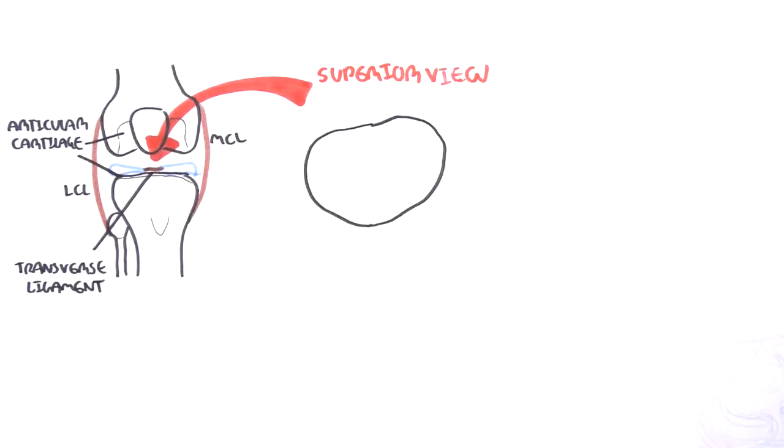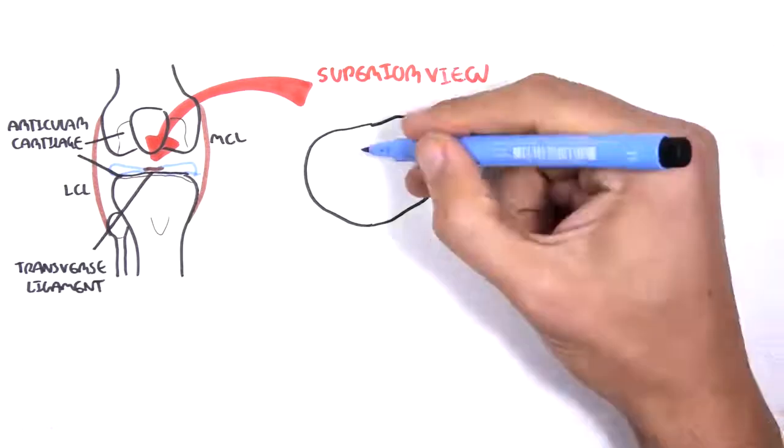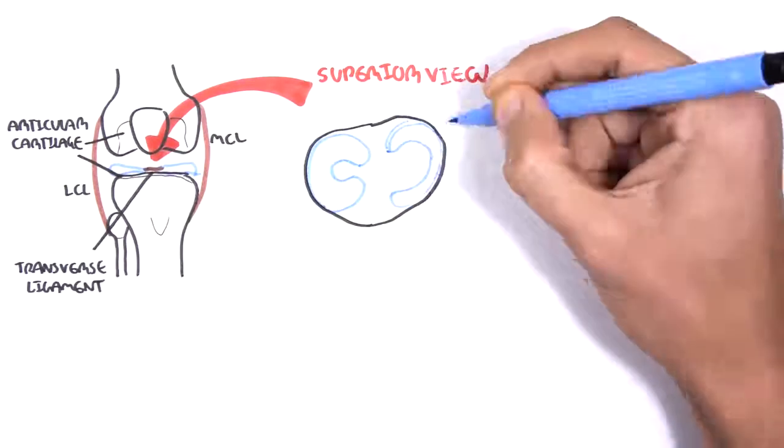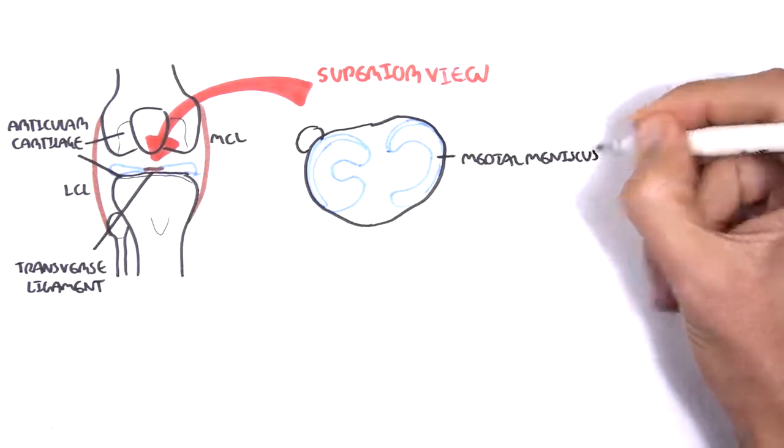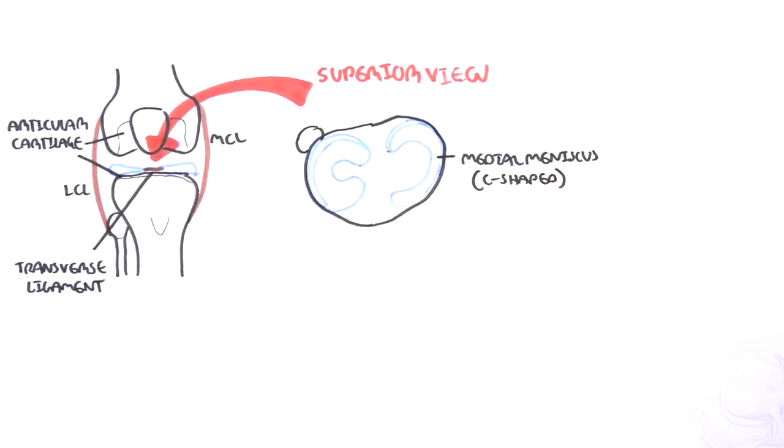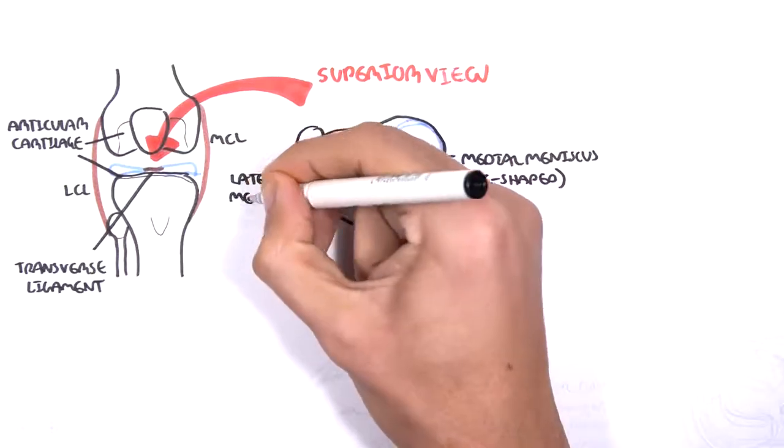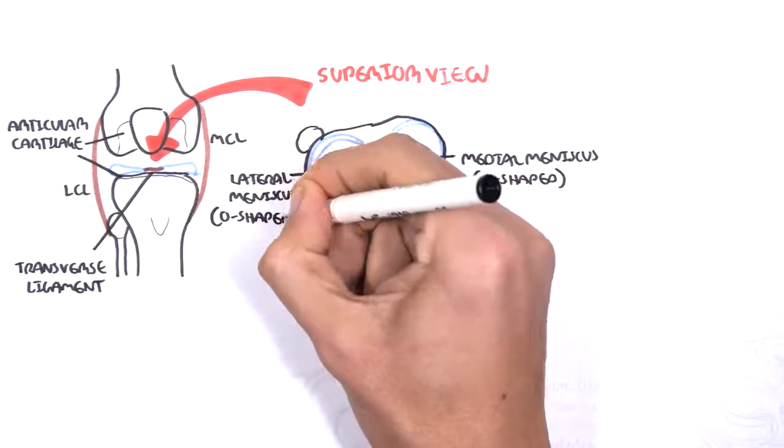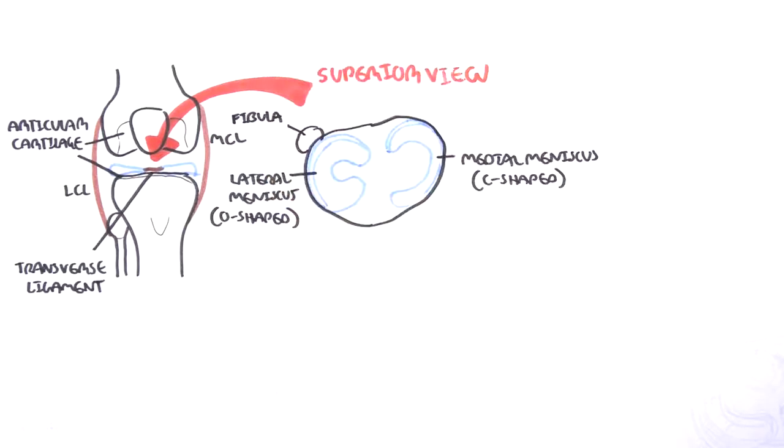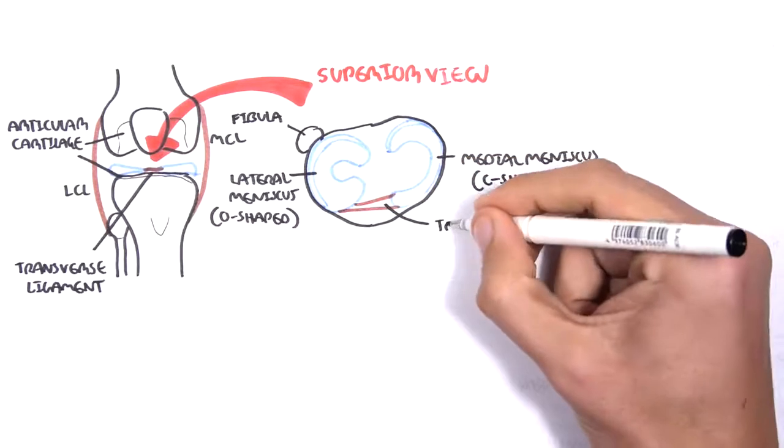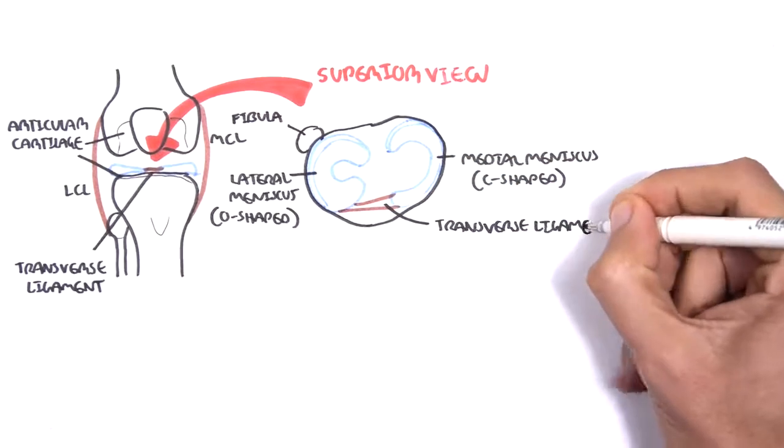Remember that the meniscus sits on the tibial bone. To orientate ourselves here, here is the medial meniscus. It is C shaped. Lateral meniscus is more of an O shaped. Here is the fibula bone at the posterior lateral part of the tibia. And again here is your transverse ligament connecting the anterior horns or anterior parts of the meniscus.